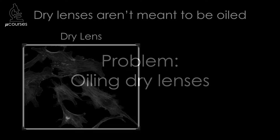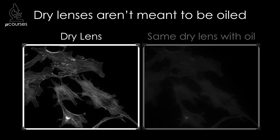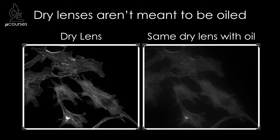I'm going to discuss three different problems with immersion oil. The first is when immersion oil is used with a lens that was designed to be used without any immersion media, which we call a dry lens. When an objective lens is designed, the optical engineer assumes that the lens will either be used dry or with a particular type of immersion media. So immersion oil is essential to an oil immersion lens, but it's detrimental to a dry lens.